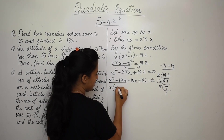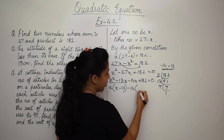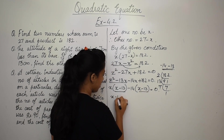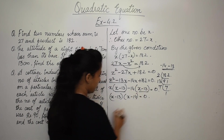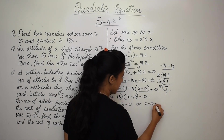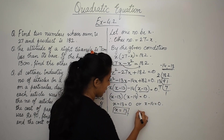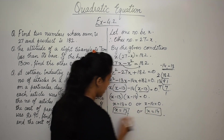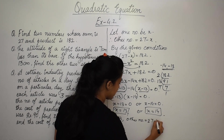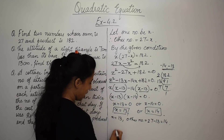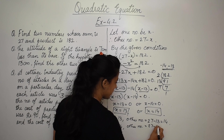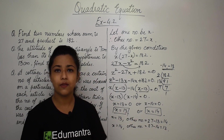Taking x common from first two terms: x(x - 13), and -14 common from last two: -14(x - 13). So (x - 13)(x - 14) = 0, giving x = 13 or x = 14. If x = 13, the other number is 27 - 13 = 14. If x = 14, the other number is 27 - 14 = 13. So the two numbers are 13 and 14.